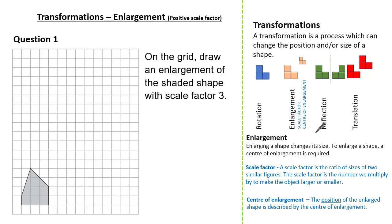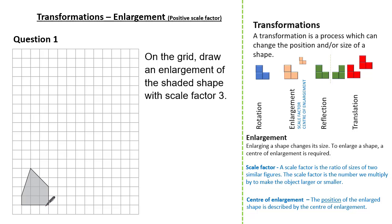Let's have a look at a past exam question. The question shows us a grid and wants us to draw an enlargement of the shaded shape with a scale factor of three. Since we know the scale factor is the number we multiply all lengths by, and we're not given a center of enlargement, this question is straightforward. All we need to do is look at each length and multiply by three. Our base length is three squares, so we draw a base length of nine squares anywhere on the grid — three multiplied by three gives us nine.